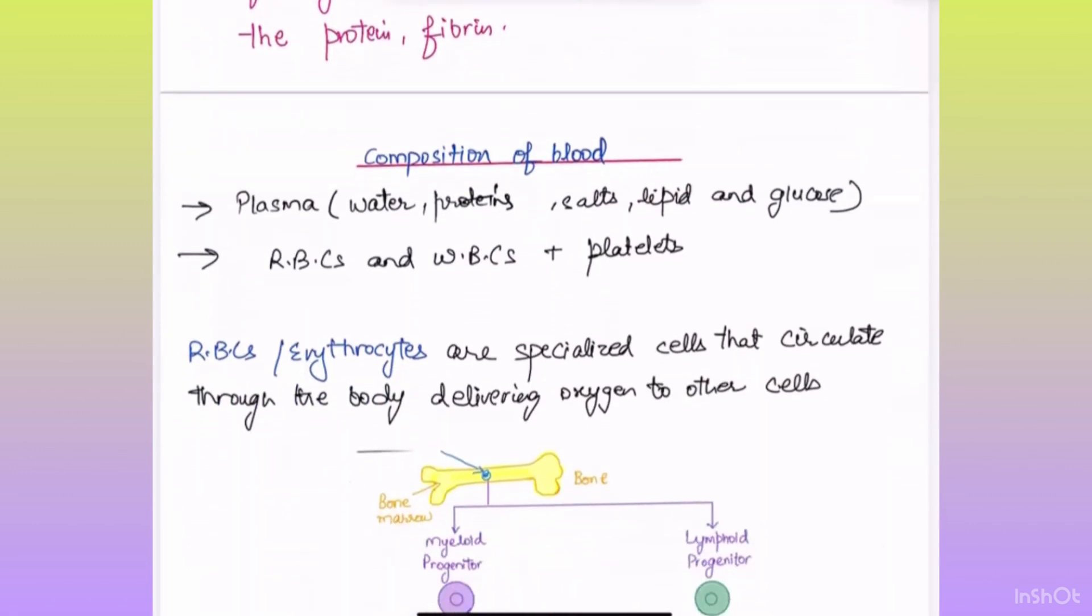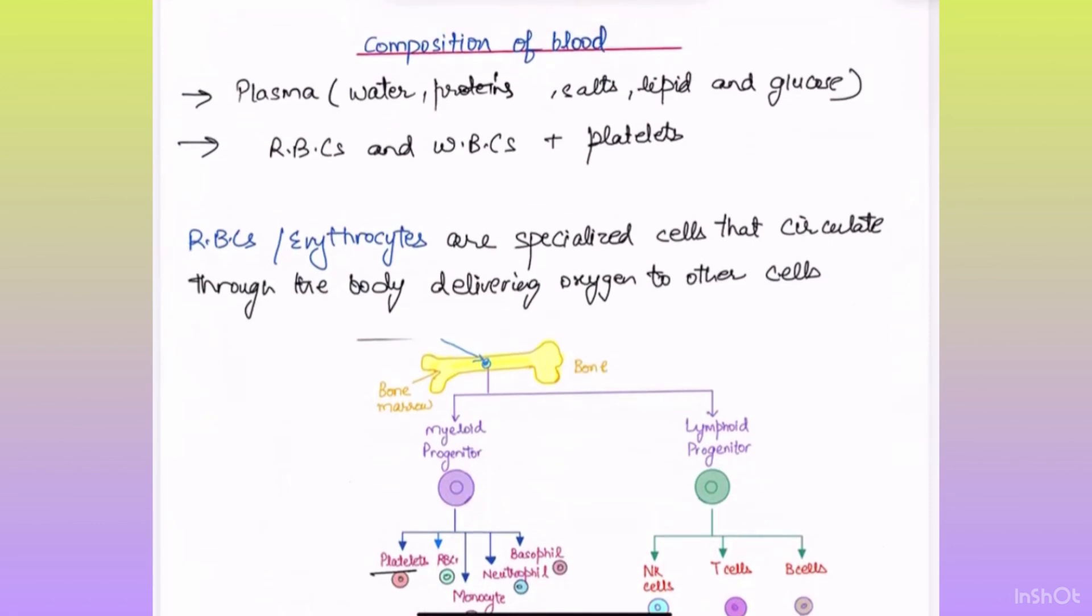Next is composition of blood. Blood is composed of plasma and serum. Plasma has water, proteins, salt, lipid and glucose. Also, it has RBCs and WBCs plus platelets.